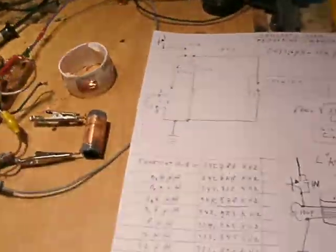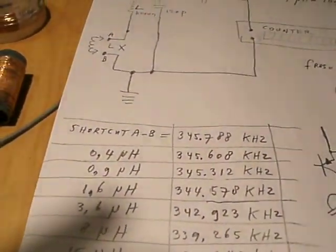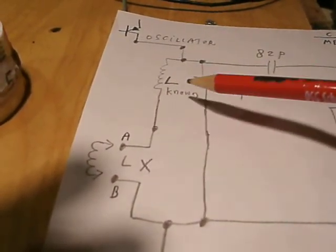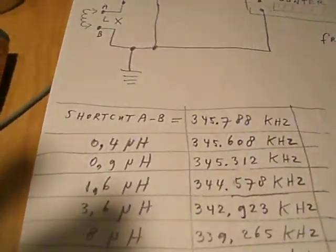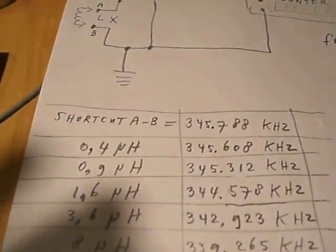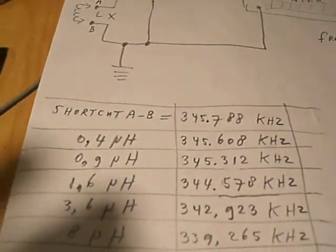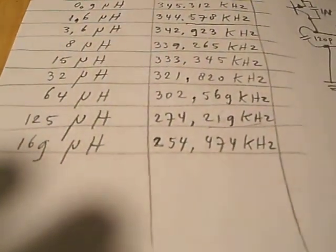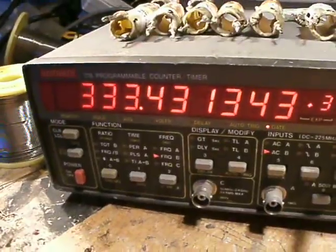Okay, here you see the table that I have made by measuring the frequency when we put the unknown coil here in series with the known coil. And then you see that 0.4 microhenry is 345.608 kilohertz, and the highest value, 169 microhenry, is 254.474 kilohertz. So you can derive from the frequency the inductance.